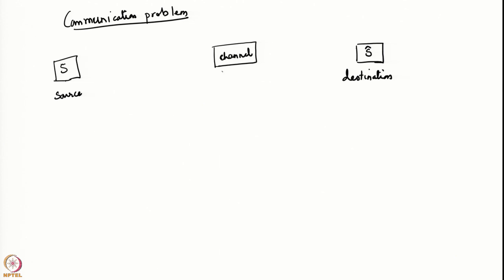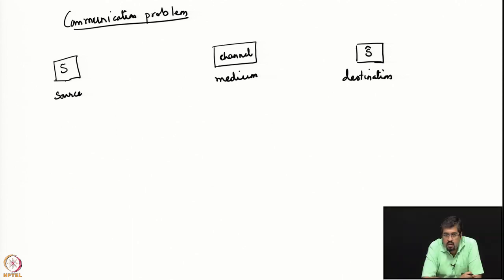This is called a channel. This medium could be, for example, telegraph, post, email, sound waves, or the kind of medium you are using right now — the internet — all of these are various types of communication media. And the source is to be sent to the destination over this medium.